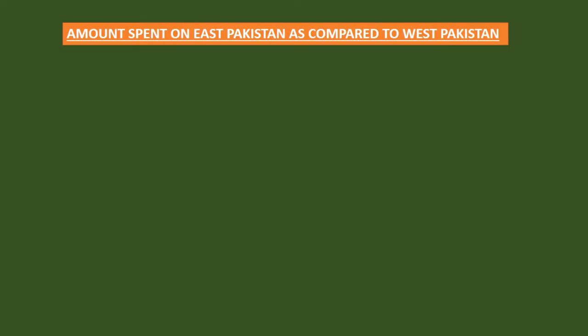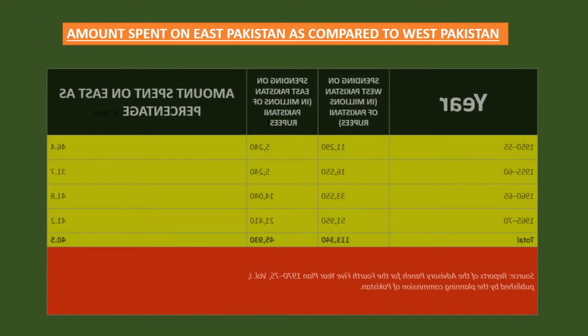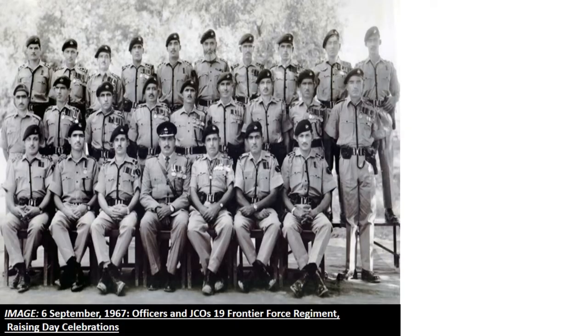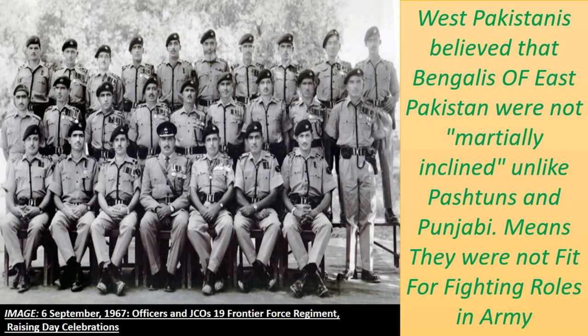Now comes the second most important point: disparity. Take a look at this chart. Although East Pakistan had a larger population, West Pakistan dominated the divided country politically and received more money from the common budget — nearly 40% of the amount was spent on West Pakistan from 1950 to 1970. Bengalis were underrepresented in the Pakistan military; officers of Bengali origin made up just 5% of the overall force by 1965, with only a few in command positions and the majority in technical or administrative posts. When Pakistanis believed that Bengalis were not martially inclined, unlike Pashtuns and Punjabis, this martial races notion was dismissed as ridiculous and humiliating by Bengalis.